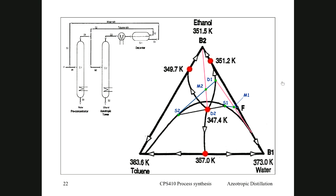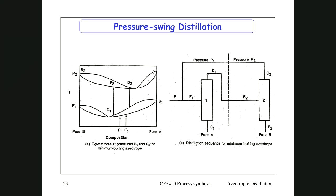This is the power of using ternary plots and residue curves to break azeotropic mixtures. There are two ways to break azeotropes: one using liquid-liquid equilibrium as we've just done, and the other is pressure swing distillation. We covered pressure swing distillation briefly before, but now we'll go into more detail using binary TXY curves.